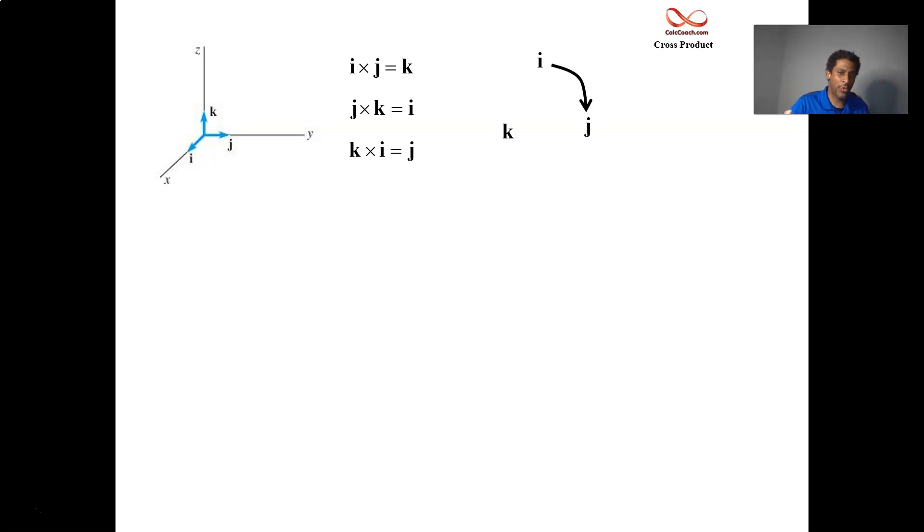Whenever you cross two, you'll get the third in that order. If you cross in opposite order, you should get the opposite sign. If you were to cross j and i, maybe even do it using the right hand rule, you'll see that what you get out is negative k. If you cross k and j, you'll get negative i out. And if you cross i and k in that order, you'll get negative j out. And so we can actually use this to help us figure out the cross product.